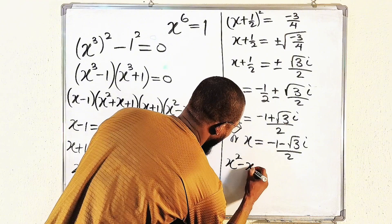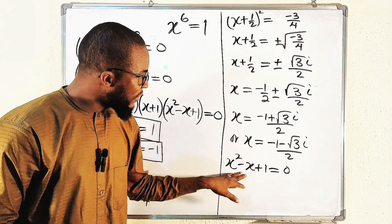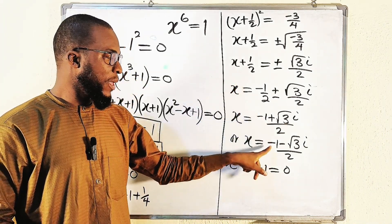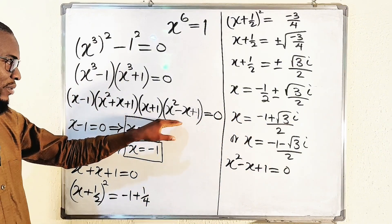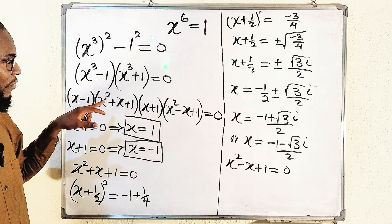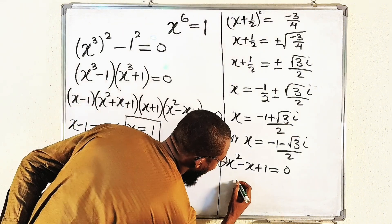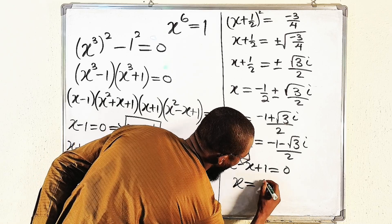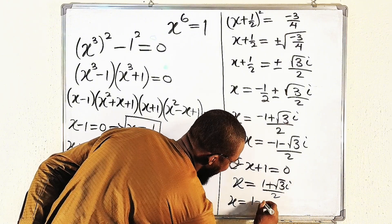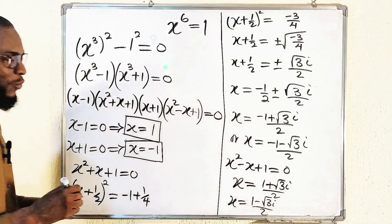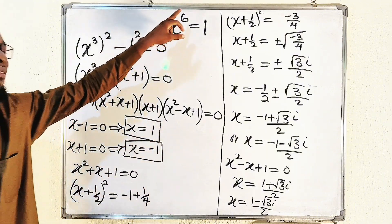For the second quadratic, x² minus x plus 1 = 0. The only difference from the previous quadratic is the sign on the x term. By the same method, the solutions are x = (1 + √3 i)/2 and x = (1 − √3 i)/2. So in total we have six solutions: 1, −1, (−1 ± √3 i)/2, and (1 ± √3 i)/2 — exactly as expected, since the degree is 6.